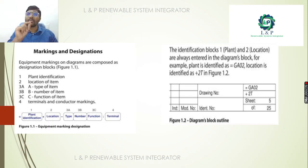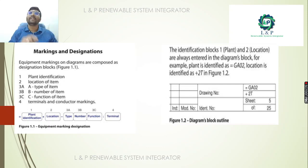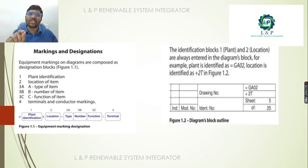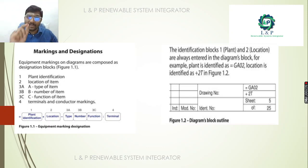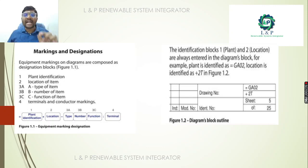Next is the function — what sort of function it performs: whether it is doing a monitoring function, a controlling function, a heating function, or a cooling function. Those things need to be mentioned, so the function type is very important. Finally, we need to mention the terminal and conductor marking, including the terminal number. This is basically how marking and designation is done on equipment in the diagram.